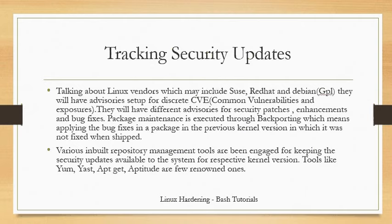The first type of hardening I will be covering in this tutorial is tracking security updates. Linux vendors, which may include SUSE, Red Hat and Debian, will have advisory setups — various types of security advisories, enhancement advisories, and bug advisories. They will be looking for discrete CVEs, which are Common Vulnerabilities and Exposures, and will have different advisories for security, enhancement and bug.